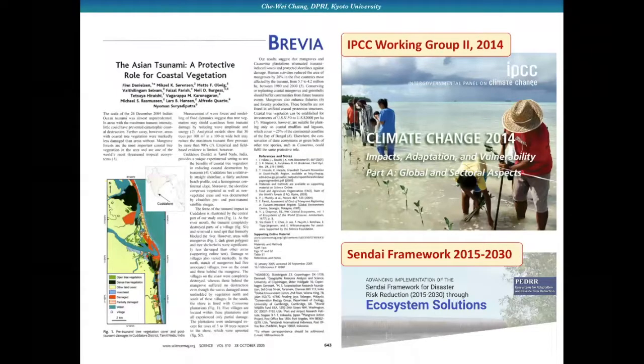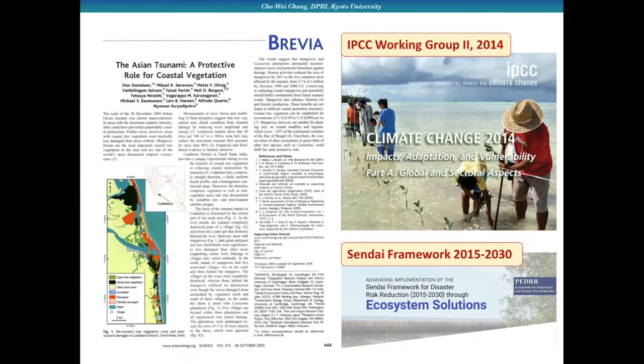Mangroves as a kind of coastal vegetation in tropical and subtropical areas have been drawing attention since the 2004 Indian Ocean tsunami. They are capable of dissipating tsunami and storm wave energy. Their functions on reduction of coastal disasters were also pointed out in the IPCC report in 2014.